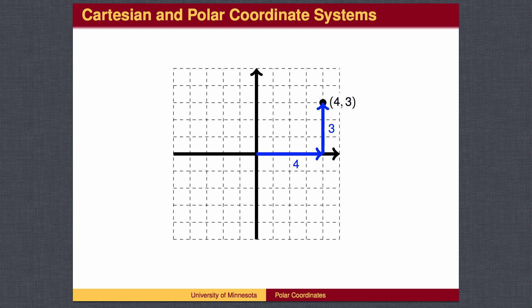Mathematically, we call this the Cartesian coordinate system. The x-axis measures the distance left and right, and the y-axis measures the distance up and down.